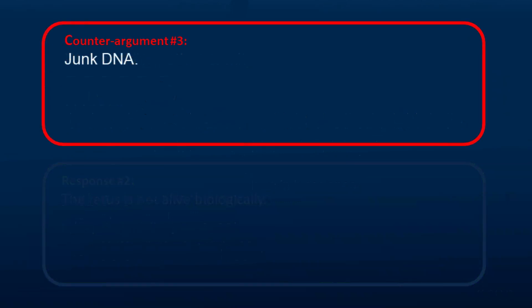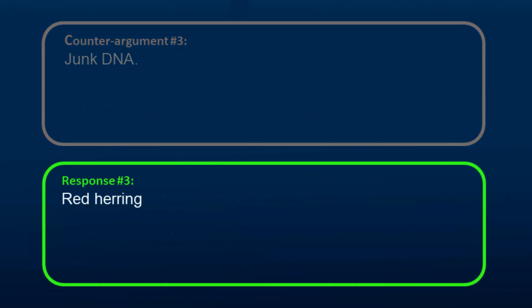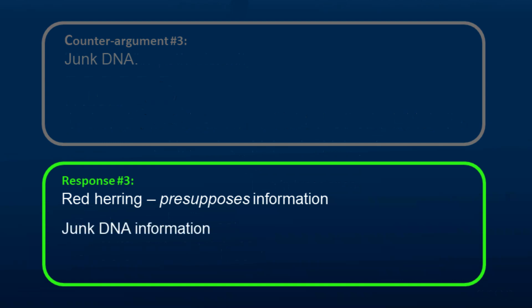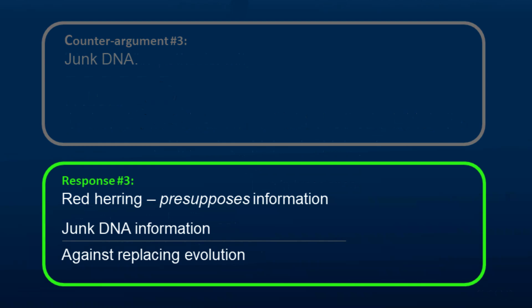Another counter-argument is about the presence of junk DNA. This argument is a red herring in regards to the information in DNA since it presupposes the presence of information. Junk DNA still carries information. The junk DNA argument is used against those who seek to replace the evolutionary mechanisms, and not the information in DNA.